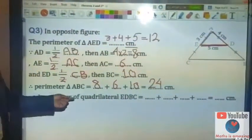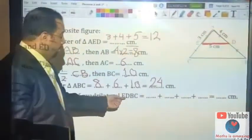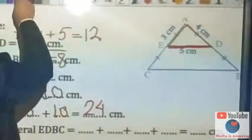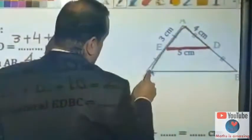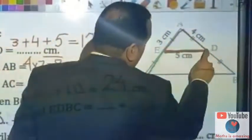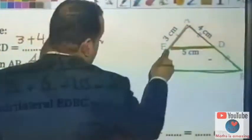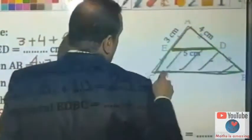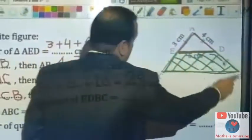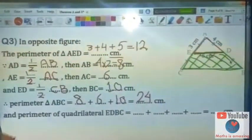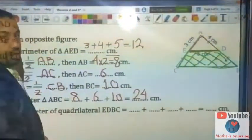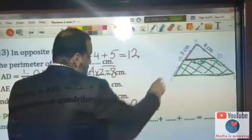The perimeter of the quadrilateral EDBC equals the sum of the four sides: ED is 5...